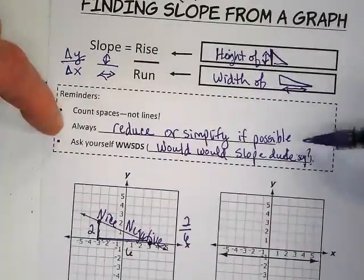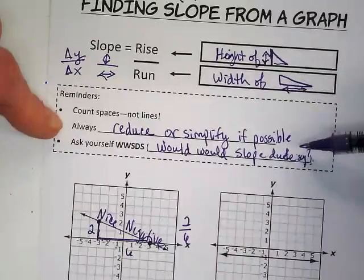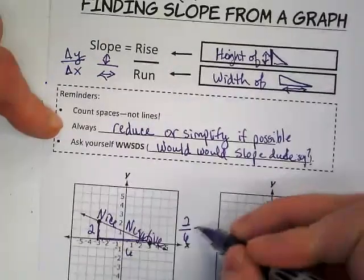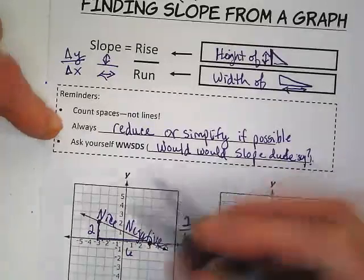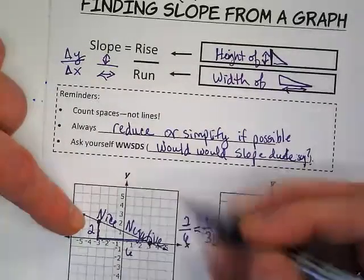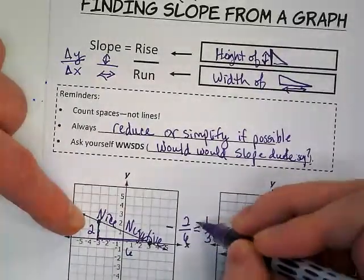I'm going to go back to this point here. Always reduce or simplify if possible. Well, this can be reduced to one over three, but don't forget it was a negative. So we need to make sure we put our negative sign in front.